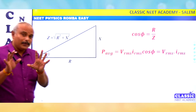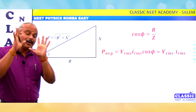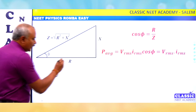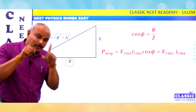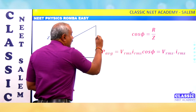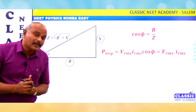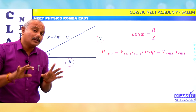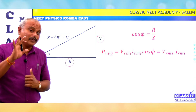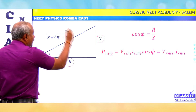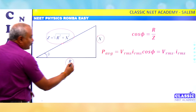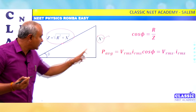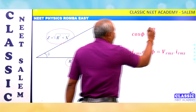This impedance triangle shows impedance, reactance, and resistor. R is the actual resistor — there is power dissipation. X is the reactance — that is the inductor or capacitor — this is virtual resistance, meaning there is no power dissipation. Z is the impedance: the combination of resistance and reactance. So power factor is R by Z.